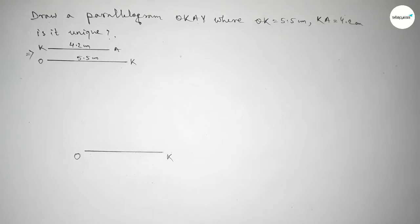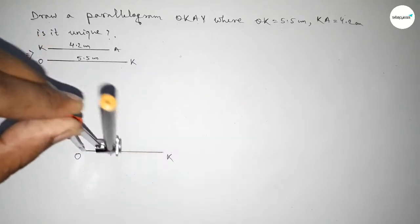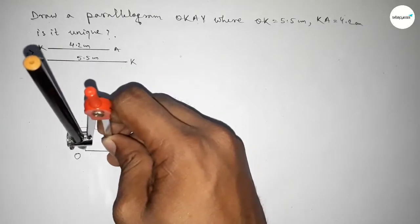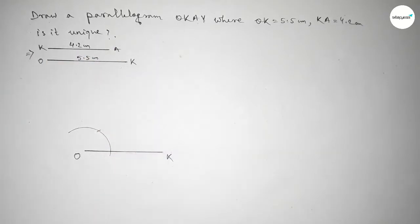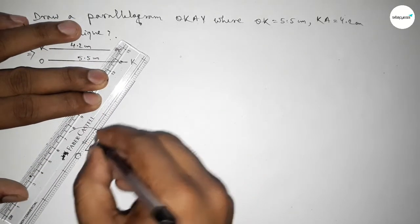Now I'm taking here a 60-degree angle, so putting the compass here and drawing an arc by this way with the same length and cutting here. So I'm drawing here a 60-degree angle. You can draw 30 degrees or 45 degrees. Now joining this line, so this angle is 60 degrees.